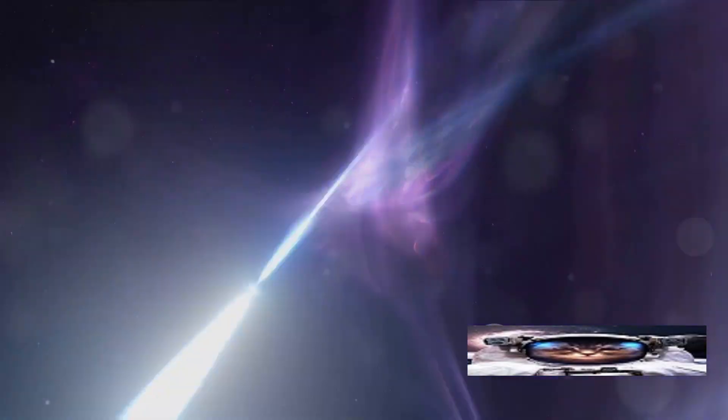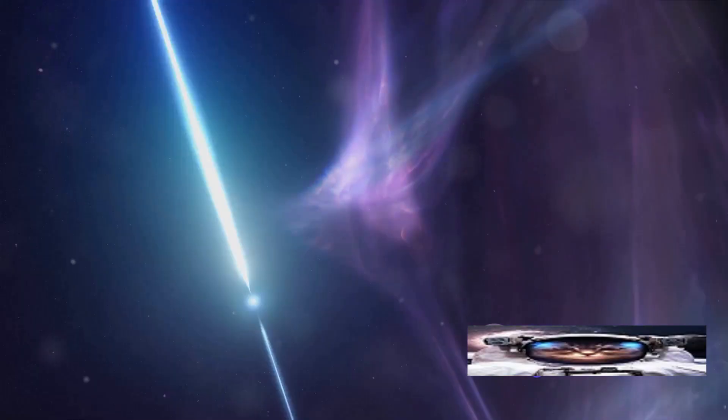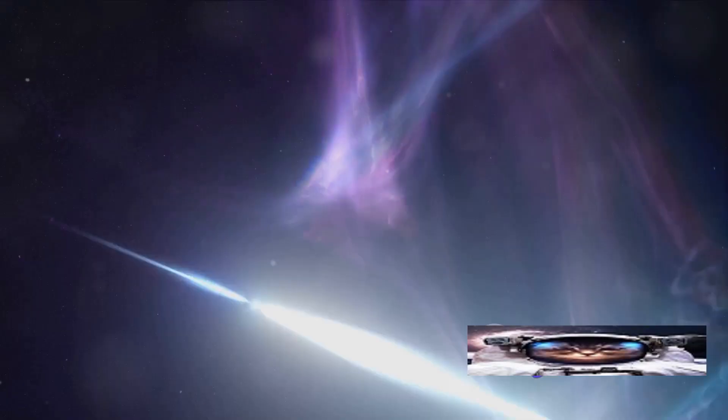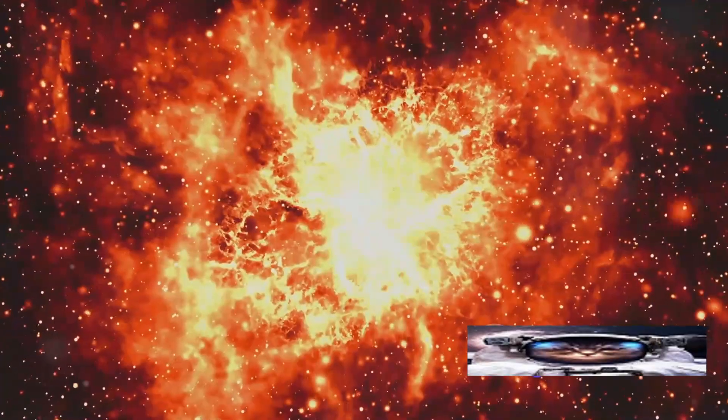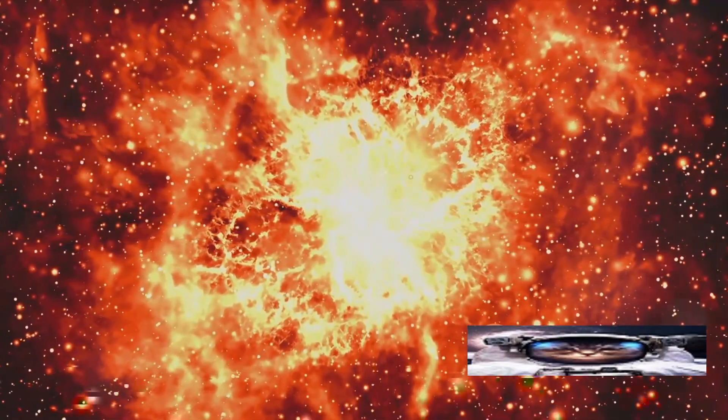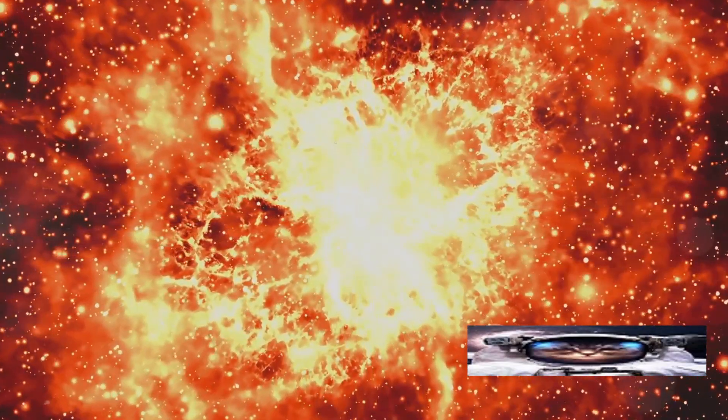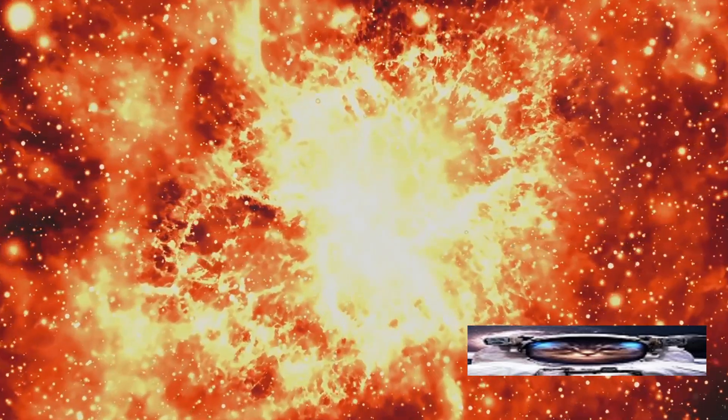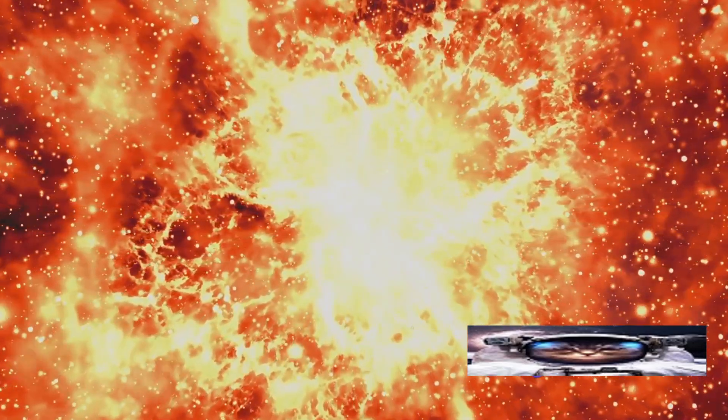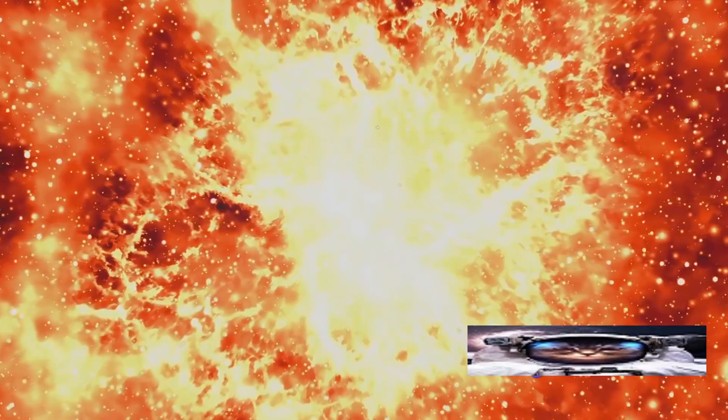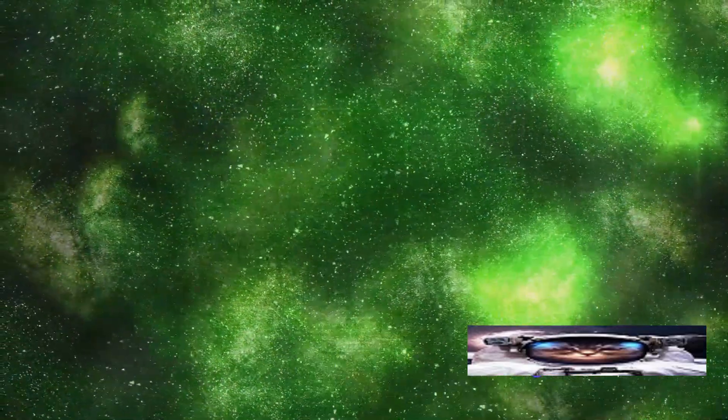When a photon strikes an atom, it can excite the atom's electrons, causing them to jump to a higher energy level. When the electrons eventually fall back to their original energy levels, they release energy in the form of light. The color of this light depends on the type of atom and the energy level of the electron. For instance, oxygen atoms commonly emit green light, while hydrogen and nitrogen often produce red light.